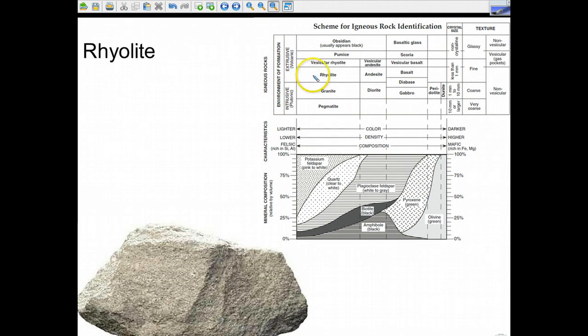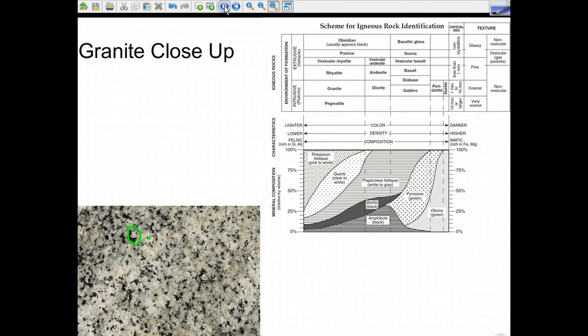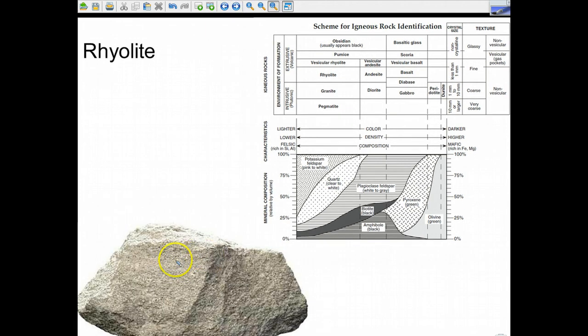And then here we go to rhyolite. So you can see the jump from granite close-up to rhyolite. You can no longer see the grains. It's actually considered fine-grained texture, and therefore is an extrusive igneous rock.